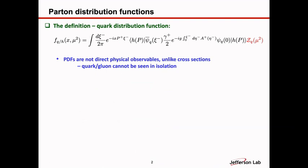In my talk, I concentrate on the parton distribution itself as a function of X, the momentum fraction — how precisely we can measure them and what kind of physics we can learn from the distribution itself. I give a simple definition of the quark distribution as an example, which is defined as a matrix element of the quark field correlated with a specific spin projector. In this case it relates to the spin-averaged one. You also have a helicity distribution as well as a transversity distribution. Here I concentrate on the spin-averaged one.